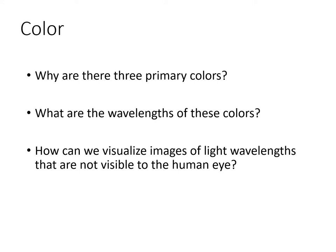This is the second of five lectures that make up the remote sensing basics section of the course, and we're going to talk about color. We're going to talk about why there are three primary colors, what the wavelengths of those colors are, and how we visualize images of light wavelengths that are not visible to the human eye.